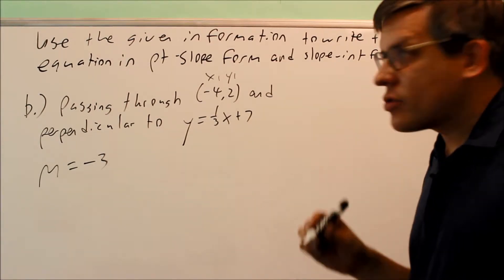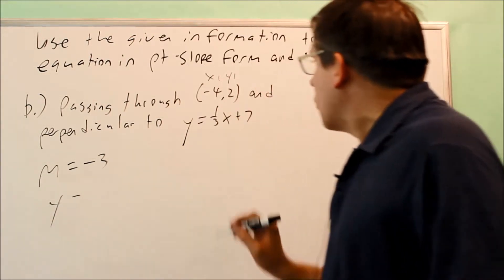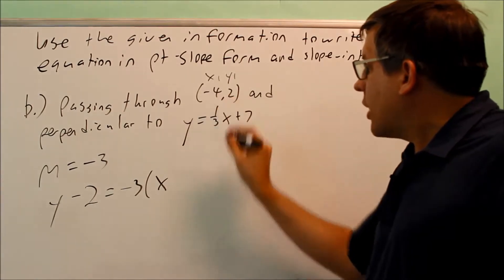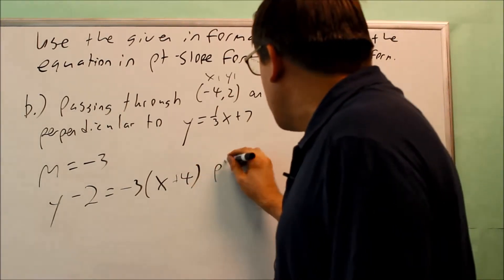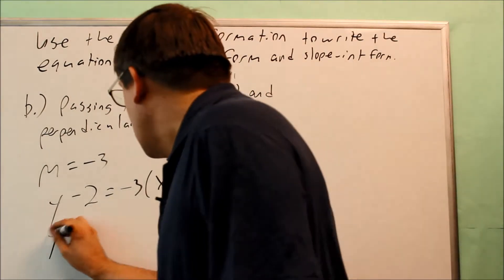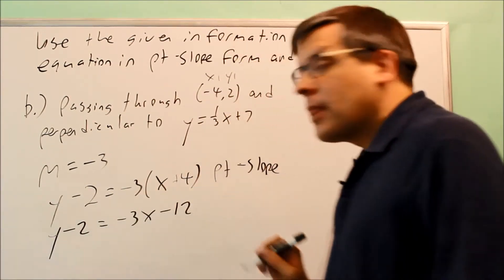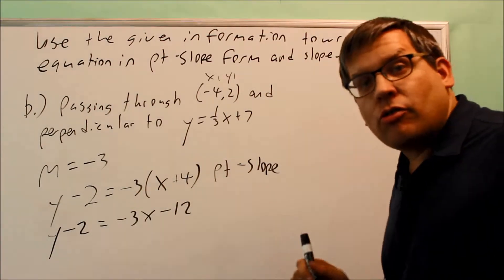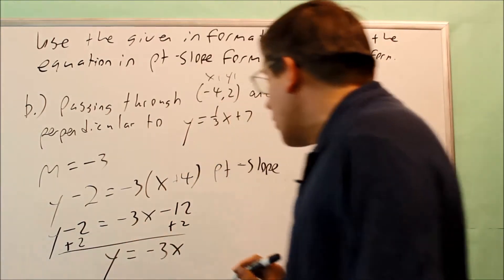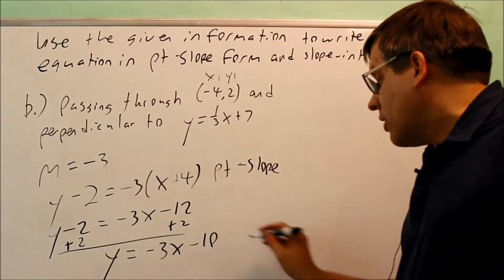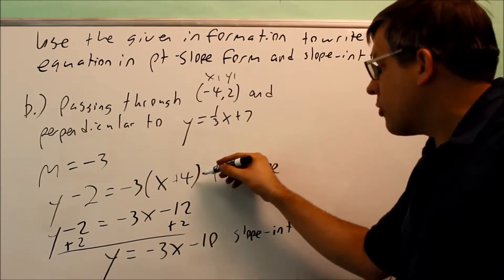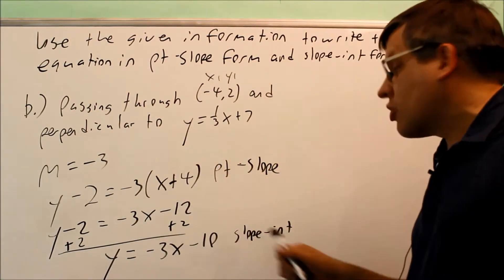Now we put it into the point-slope formula: y minus y1, so y minus 2 equals negative 3 times x minus x1. Since x1 is negative 4, minus and minus gives plus 4. This is the point-slope formula. To get slope-intercept form, we distribute the negative 3 to get negative 3x minus 12, then add 2 to both sides, giving y equals negative 3x minus 10. That is the slope-intercept form.